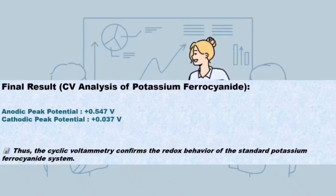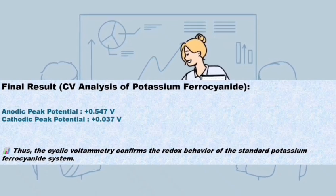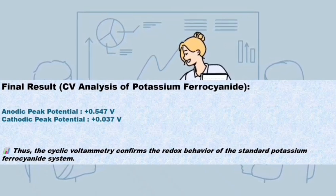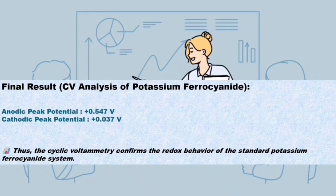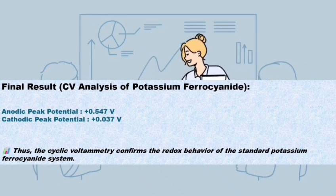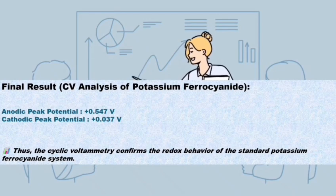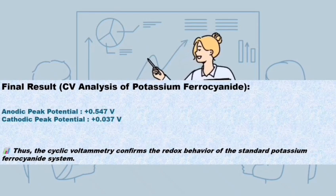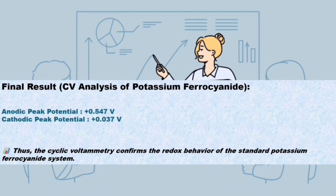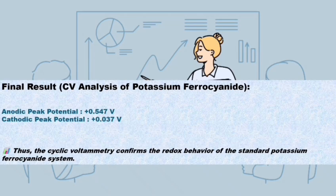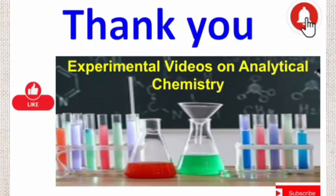Now we come to the end, so the final part is the result. The final result of CV analysis of potassium ferrocyanide is: the anodic peak potential is at +0.547 volt and cathodic peak potential is at +0.037 volt. Thus, the cyclic voltammetry confirms the redox behavior of the standard potassium ferrocyanide system.